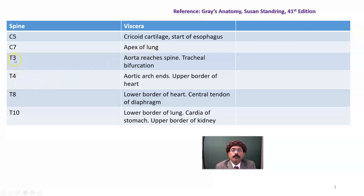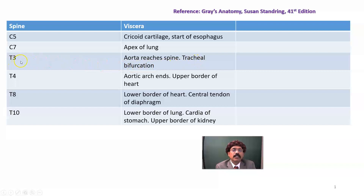At vertebral spine T3, thoracic vertebra 3, the aorta reaches the spine. We know that the ascending aorta leads to the arch of the aorta, and the arch goes near the vertebral column. At the same level, we have tracheal bifurcation at the T3 level.